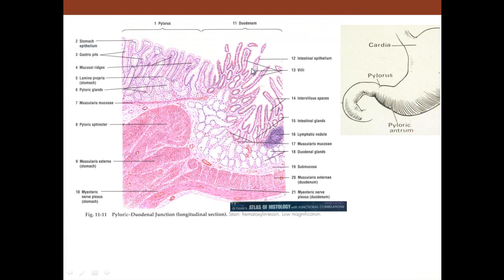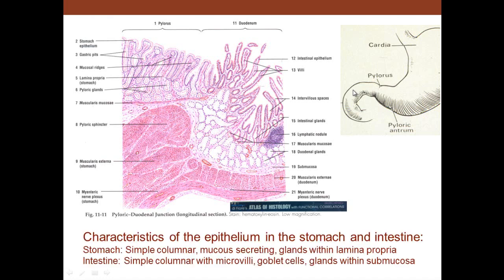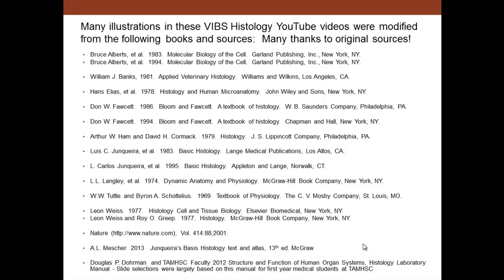Coming out of the pyloric region of the stomach you enter the duodenum of the small intestine, where you see Brunner's glands in the submucosa. To summarize the epithelium in the stomach versus the intestine: in the stomach you have simple columnar mucus-secreting glandular epithelium with glands in the lamina propria, plus cardiac and pyloric glands. In the intestine you have simple columnar epithelium with microvilli (absorptive cells) and glands in the submucosa of the duodenum and the mucosa of the intestine.